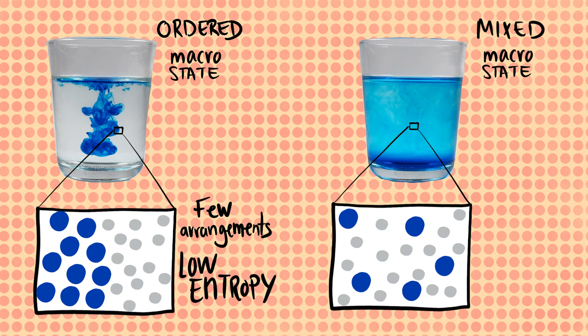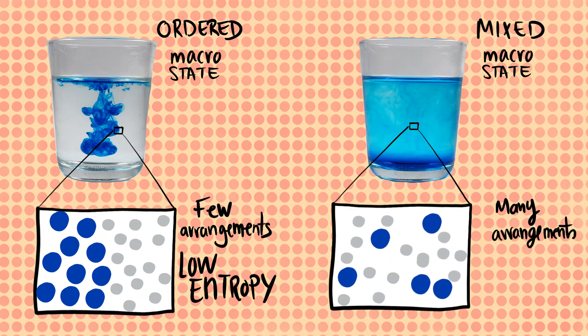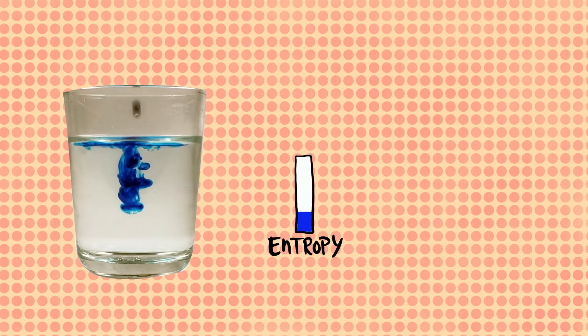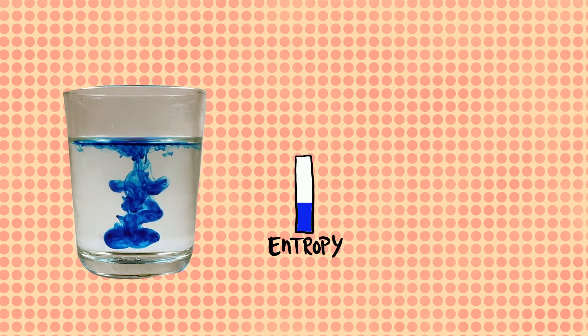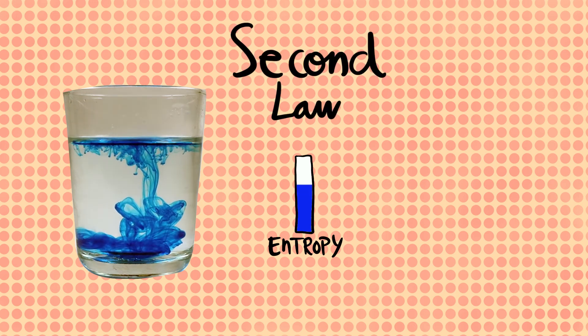In the mixed state, however, there are many more ways to rearrange the particles without destroying the macroscopic state. So the entropy of the mixed state is higher than that of the ordered state. Ink and water evolve towards higher entropy states, as dictated by the second law.